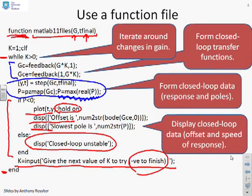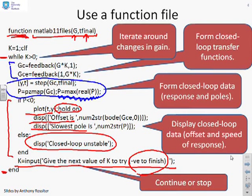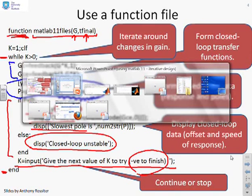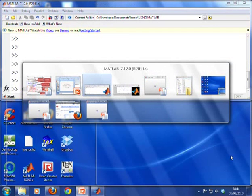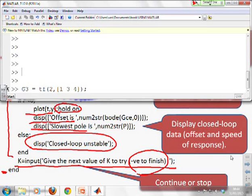I've then displayed the numerical value of the offset and the slowest pole. Next we'll move to MATLAB and show this piece of code in action.